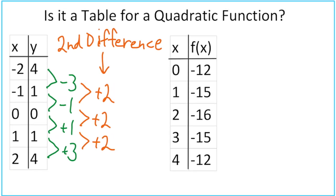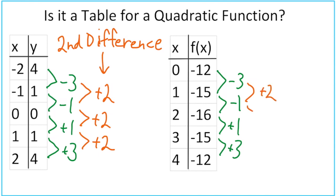Let's try another one. Find the first difference, then find the second difference. The first differences are -3, -1, +1, +3. When we take the second difference, we get +2, +2, +2, +2. So this is another quadratic function, and we can tell by finding the second difference.